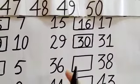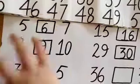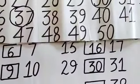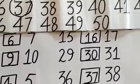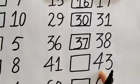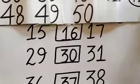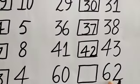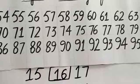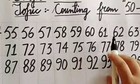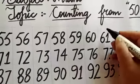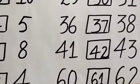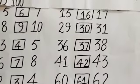Which number will come between 36 and 38? 37. Yes, 37 is the number which will come in between 36 and 38. Between 41 and 43? Yes, 42. Now between 60 and 62? Which number is in the middle? 61. So number 61 will come in between 60 and 62. Got it?